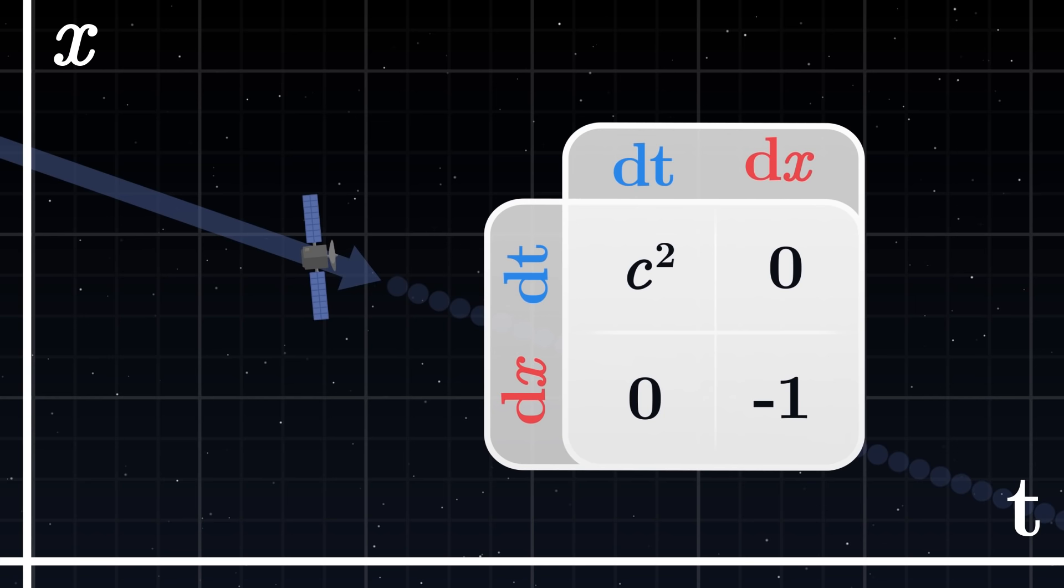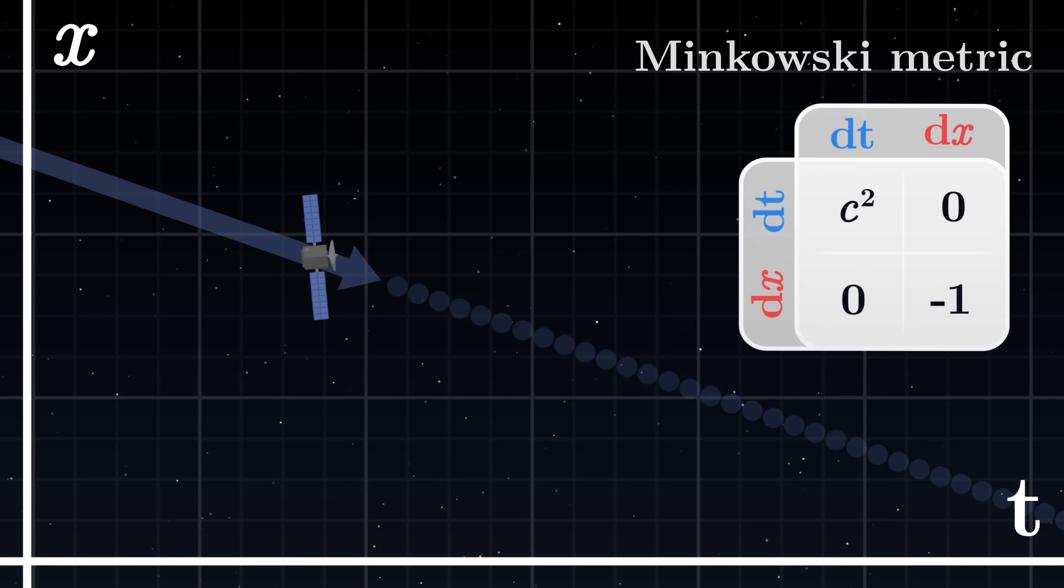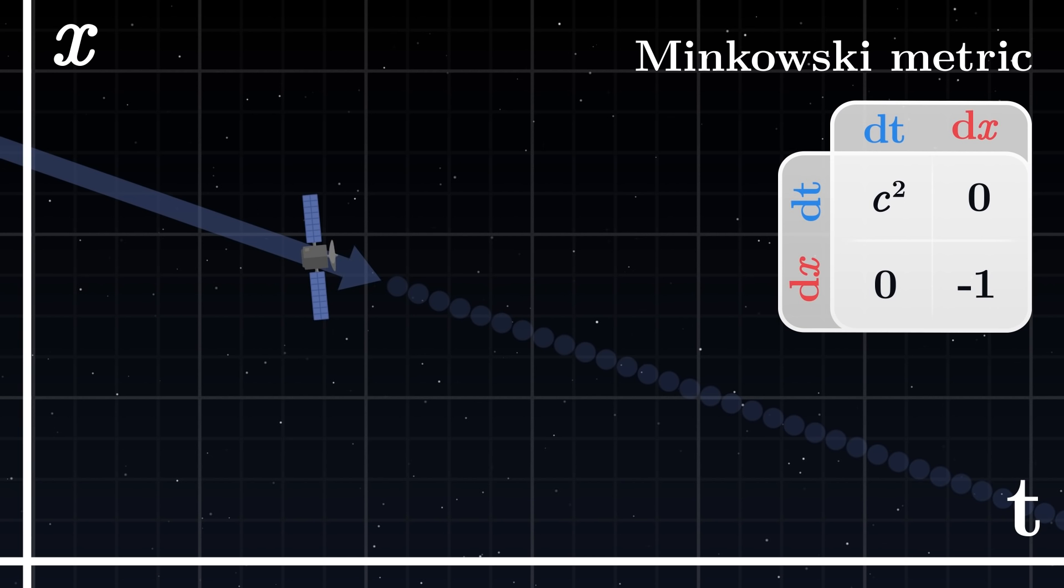This particular metric, which describes an empty space-time, is called the Minkowski metric. The Minkowski metric describes the space-time of special relativity. It is rather simple in that it does not depend on the coordinates. This space-time has the same geometry everywhere on the grid.